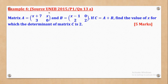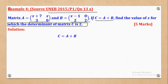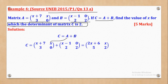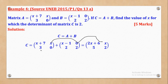Example 4 came from UNEB 2015 Paper 1 Question 13A. Given Matrix A and Matrix B, if Matrix C = A plus B, find the values of X for which the Determinant of Matrix C is 2. First we find Matrix C by adding A and B: X+7 plus X-1 gives 2X+4; X plus 0 gives X; 3 plus 2 gives 5; and 0 plus 2 gives 2. So Matrix C is [2X+4, X; 5, 2].